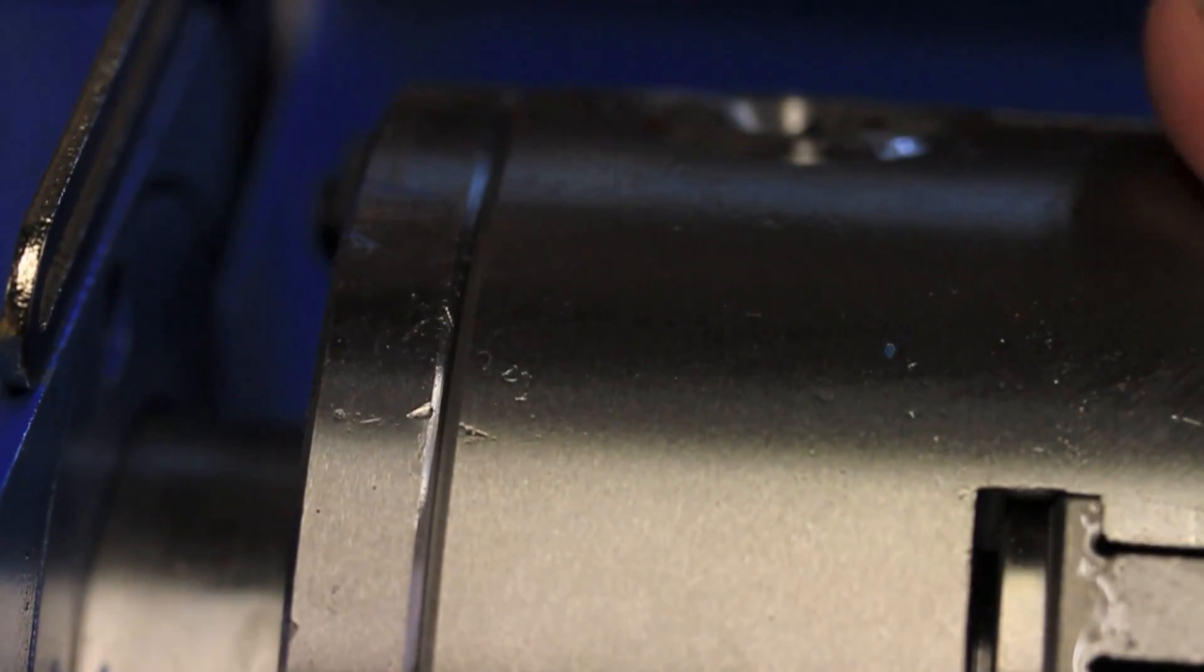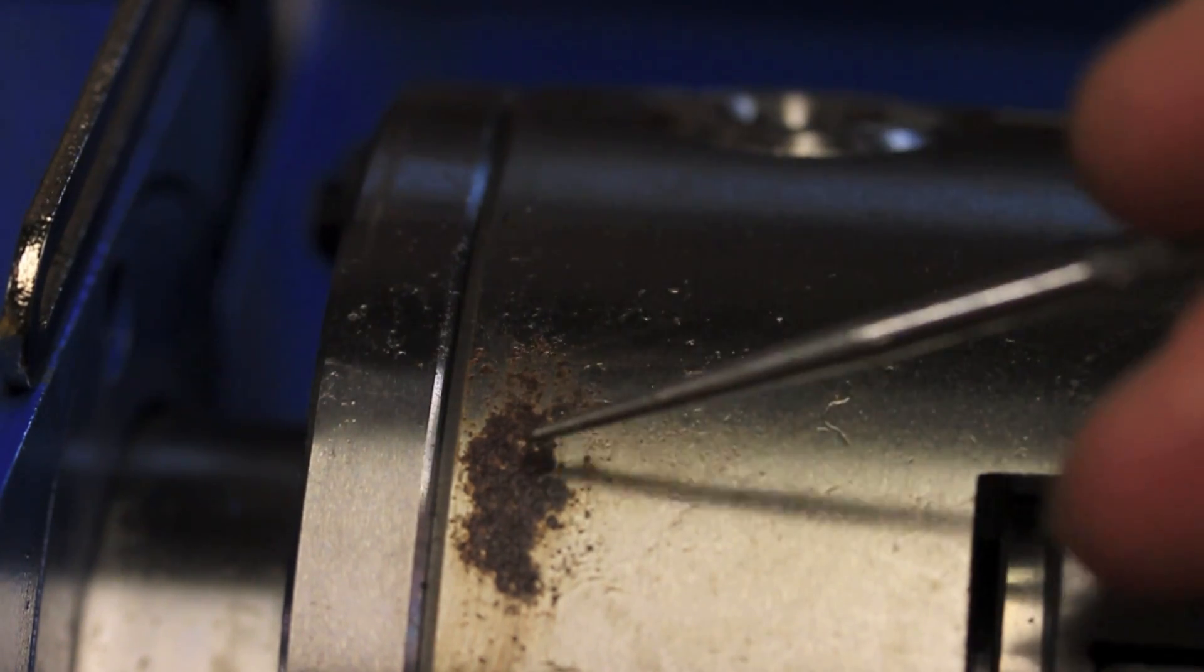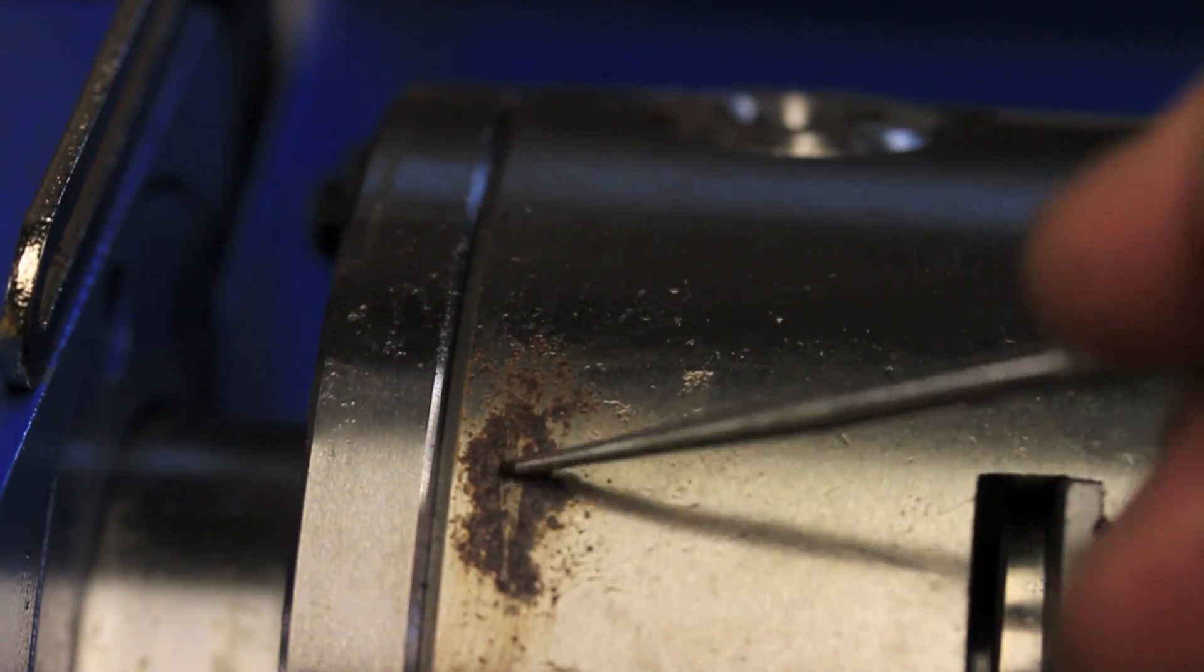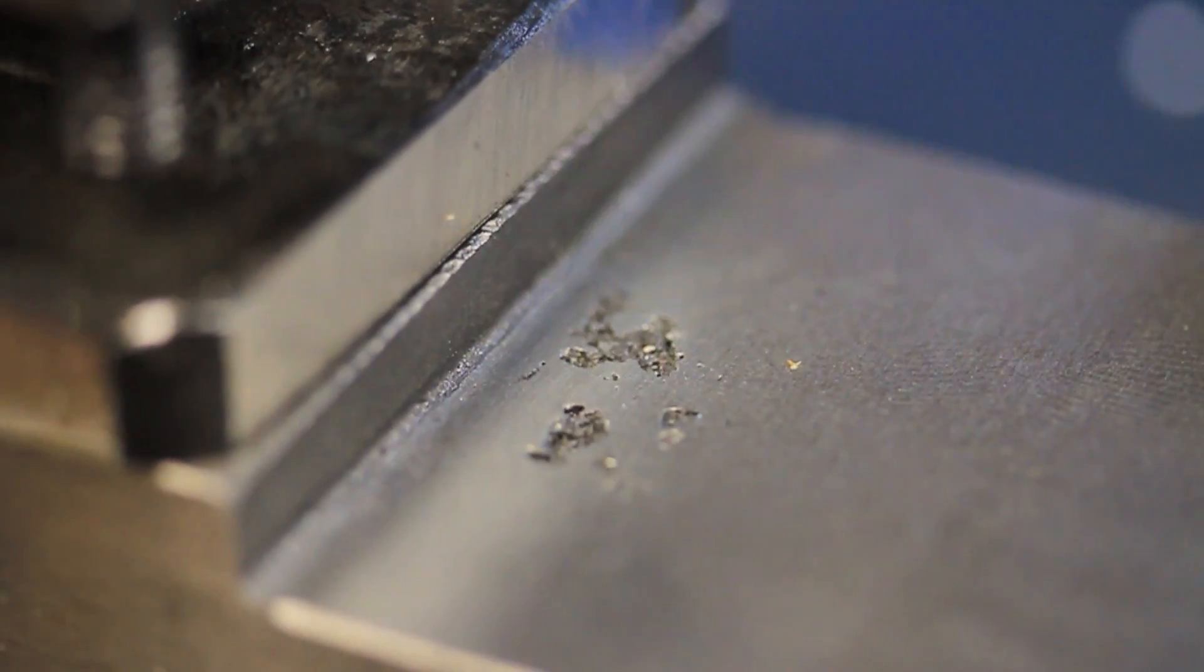Overall, the lathe came pretty well oiled, but there was one dry spot on the chuck that developed a little bit of rust. Also, the metal used was relatively cheap and there was some pitting.